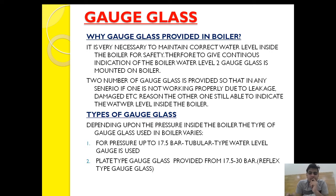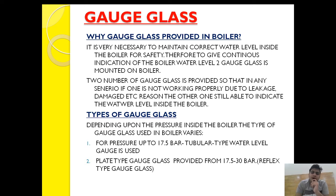Two gauge glasses are provided so that if one is not working properly due to leakage, damage, or other reasons, the other one is still able to indicate the water level inside the boiler.